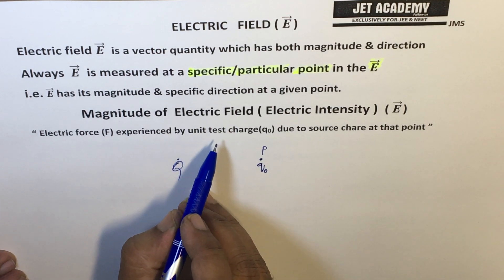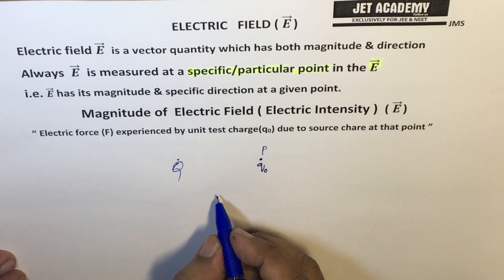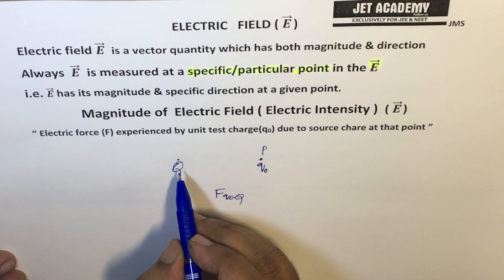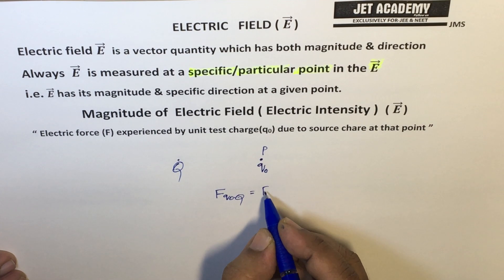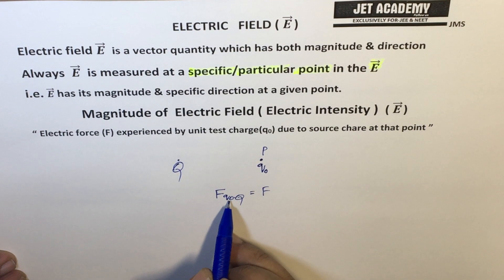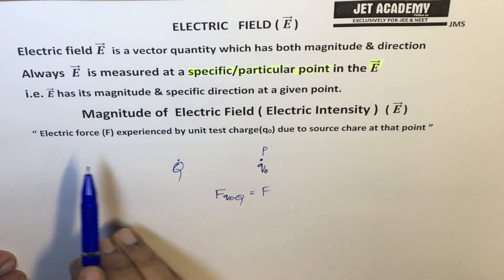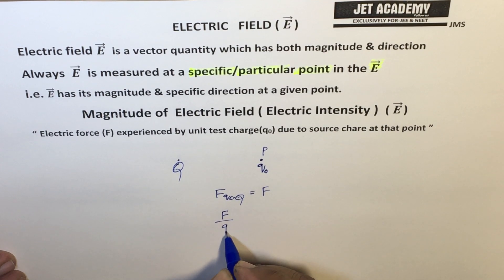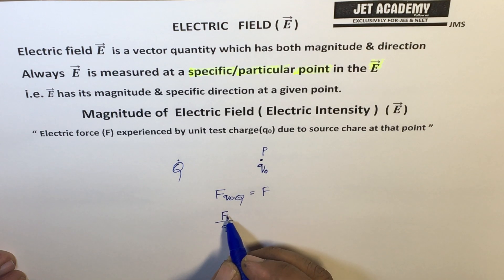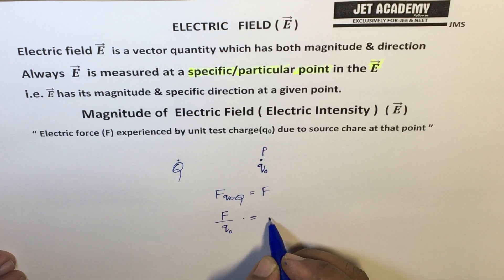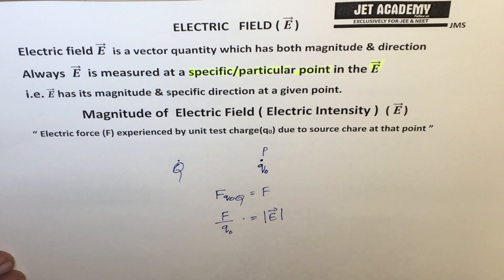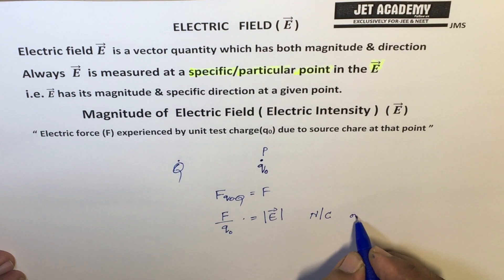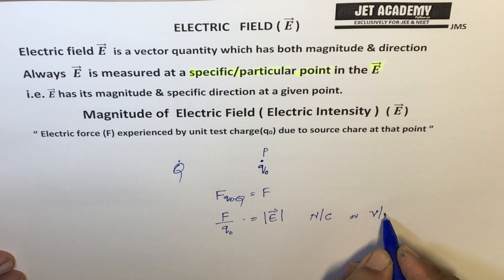The magnitude of electric intensity is the electric force experienced by a unit test charge. If the test charge has any magnitude Q₀, then the Coulombic force experienced by it is F. Dividing F by Q₀ gives the force per unit test charge, which is the magnitude of electric intensity at that given point. It is measured in SI units as Newton per Coulomb, or equivalently, Volt per meter.